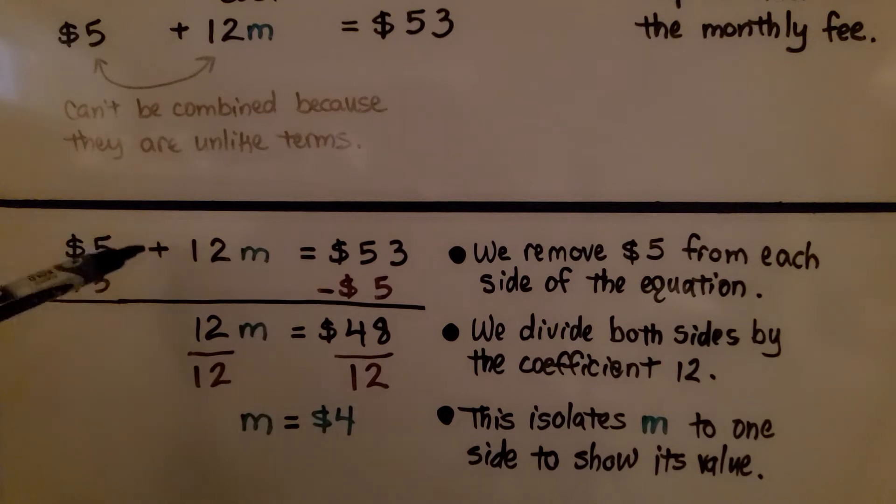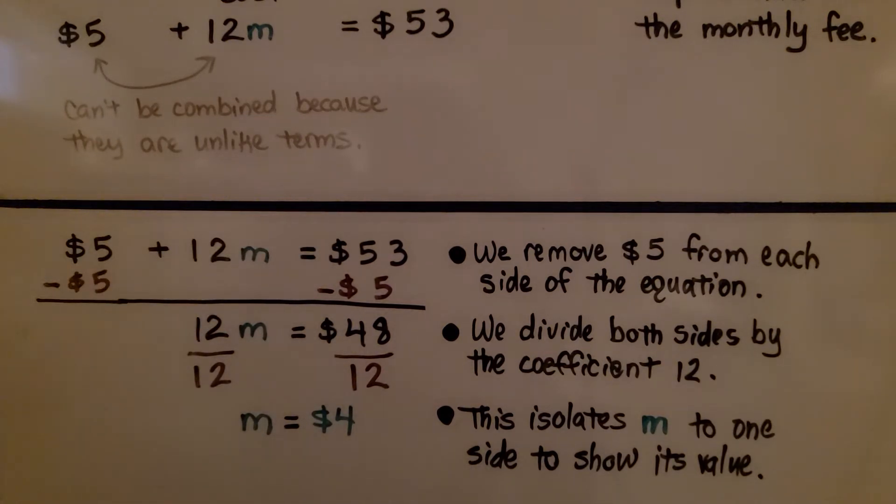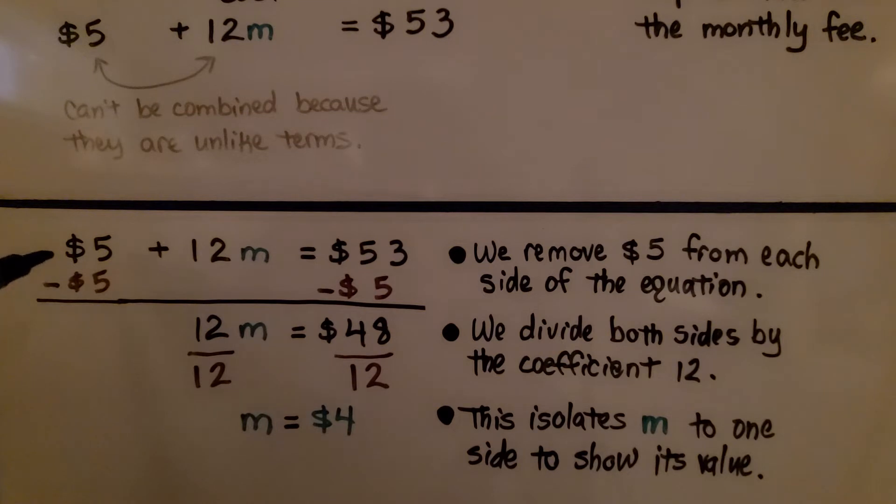We have $5 plus 12M equals $53. We remove the $5 from each side of the equation, from each side of the equal sign.